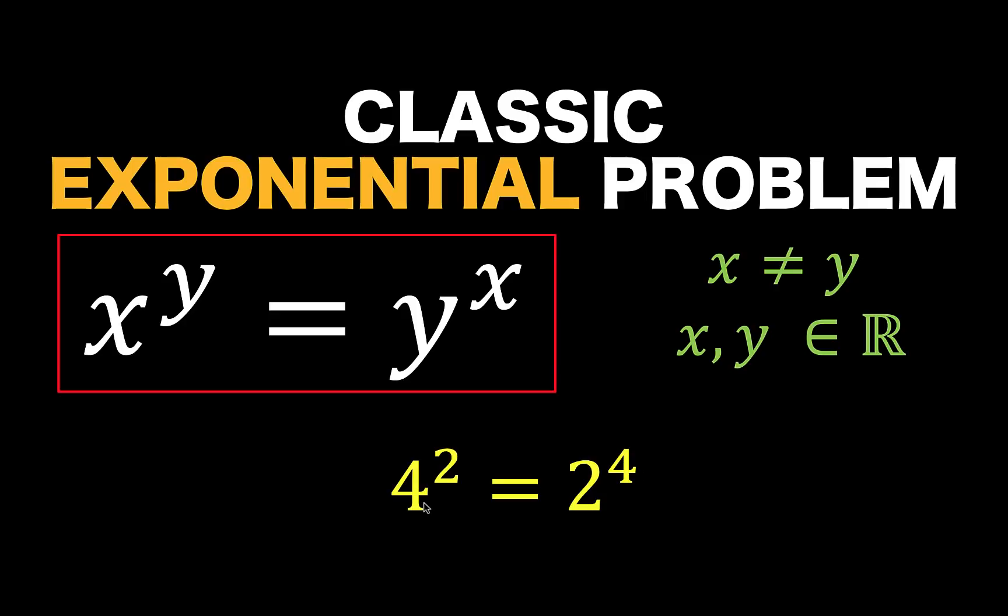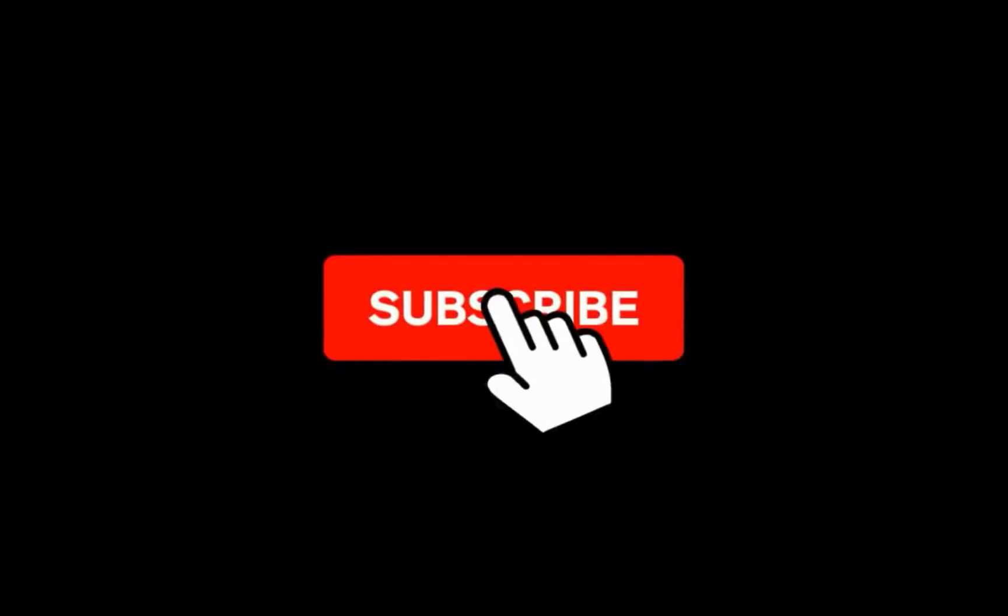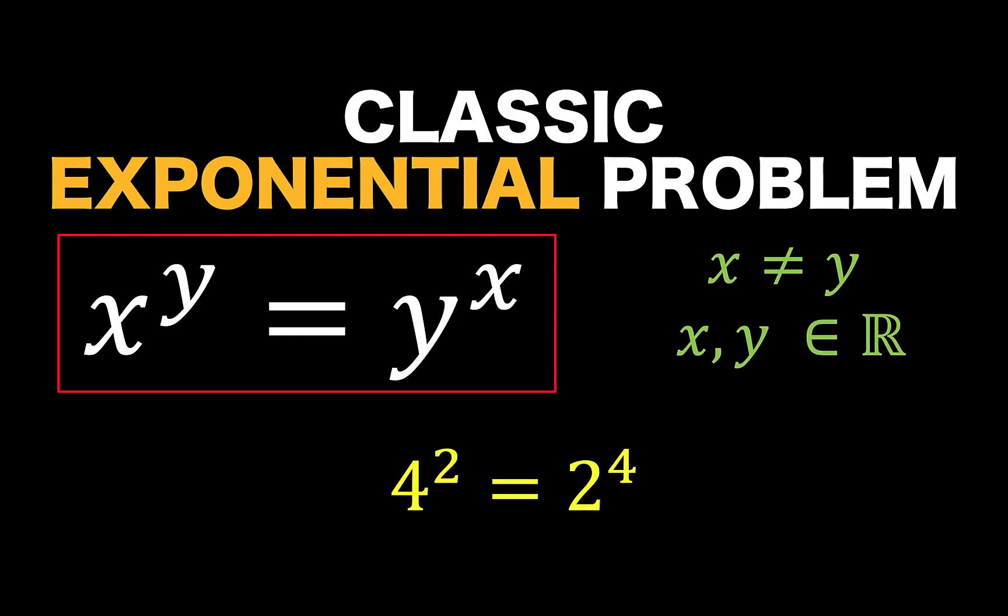And so, x equals 4 and y equals 2 is an ordered pair that satisfies this equation. But our goal in this lesson is to find the general formula that we can use in order to identify any solution set to this equation. You can pause the video and see if you can solve this algebra problem.